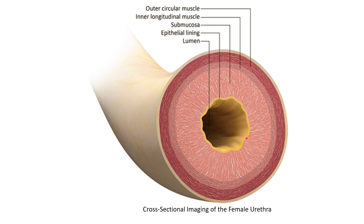This image shows the cross-section of the female urethra and its different layers. It has a lumen, surrounded by mucosa with the epithelial lining — which is transitional and pseudostratified. Below that is the submucosa layer, followed by the muscularis layer, which has inner longitudinal muscle and outer circular muscle. The outermost layer is the tunica fibrosa or tunica adventitia.